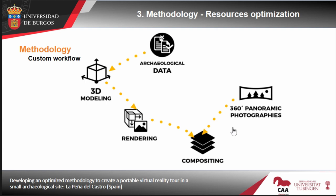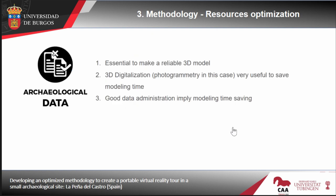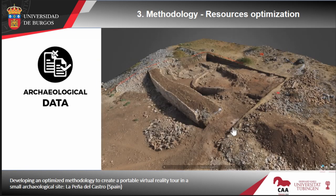Our approach involves mixing panoramic views and panoramic photos with renderings of the 3D models. We had archaeological data that could be used to make the models, and we already had 3D models done before the project. We just needed to make the panoramic photos, the renderings, and then a compositing process. Archaeological data is essential to make a reliable 3D model. We also had a photogrammetric model of the settlement that could be used as a reference for the 3D model.